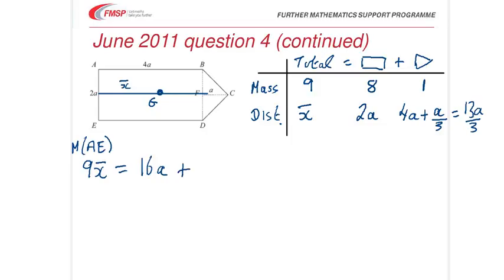Which is 16A plus 13A over 3. And that gives us X bar equals. Again, pause the video and check it. 61A over 27. That's the first part of the question. Let's move on.